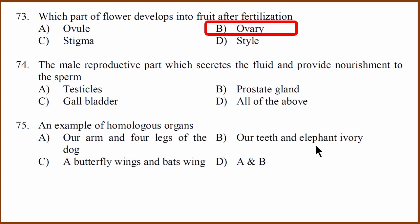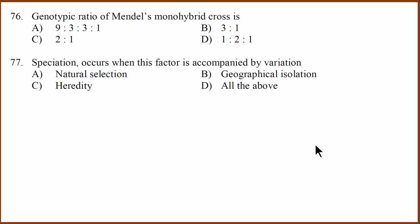Which part secretes the fluid and provides nourishment to the sperm? Prostate gland is the gland which generates the liquid and provides nourishment to the sperm. Homologous organs have the same structure, different function. So A and B is the correct answer. Why? Because our arm and four legs of the dog, they have same structure but different function. Our teeth and an elephant's ivory, the elephant's tooth and our teeth are similar but they have different functionality.